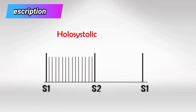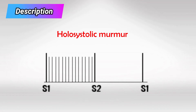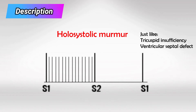The murmur is holosystolic, just like tricuspid insufficiency and ventricular septal defect. These three are the only known causes of holosystolic murmur, so if you ever hear the word holosystolic on the exam, it has to be one of those three.